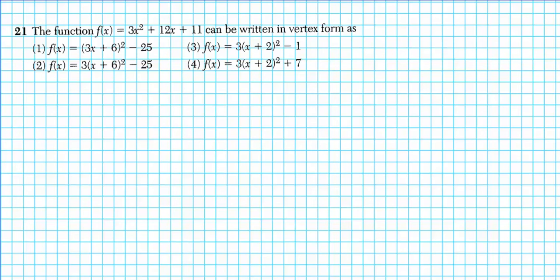Let's take a look at problem 21. It says the function f(x) = 3x² + 12x + 11 can be written in vertex form as... So we have f(x) = 3x² + 12x + 11. Now we're going to be completing the square here. First thing you want to do is make sure that the square doesn't have any coefficients.